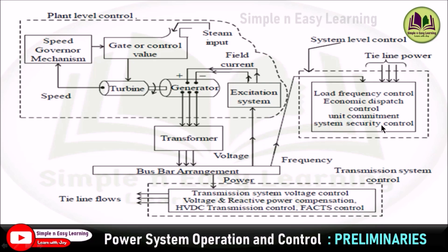The next one is system security control. The main objective of system security control is to monitor the overall power system continuously, make decisions, and take necessary control actions. There are two levels: monitoring and decision, and control actions. In monitoring and decision, the power system is continuously monitored using protective relays and circuit breakers for faults, contingencies, and failures of equipment. These monitoring devices indicate the severity of the problem.